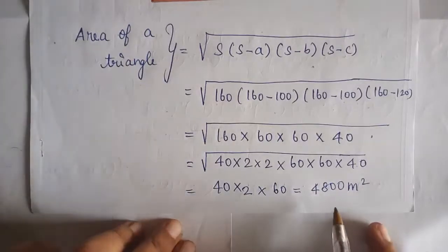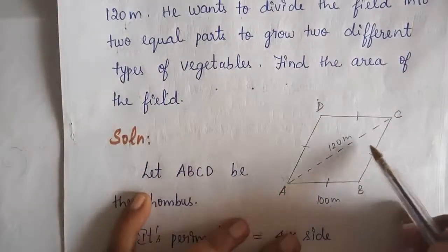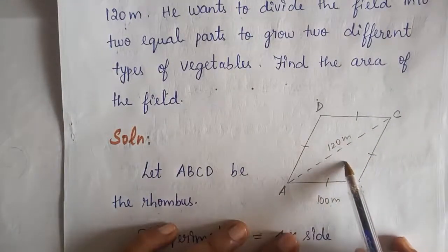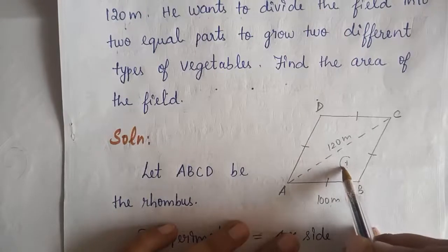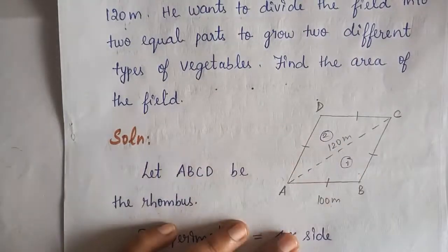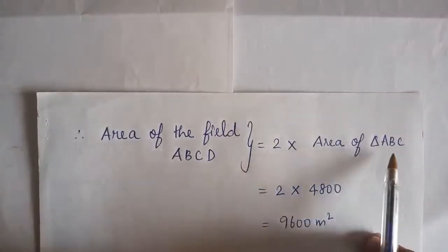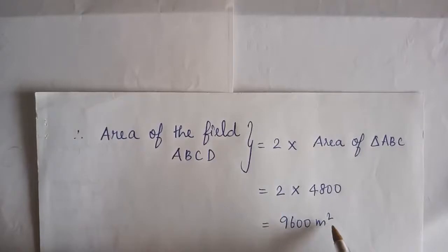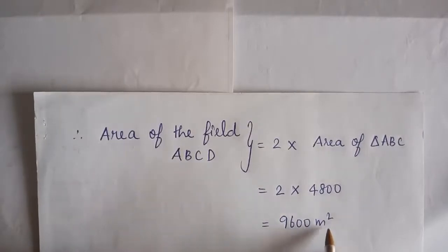Area of triangle ABC = 4800 square metres. Since the rhombus ABCD is divided into two equal triangles by diagonal AC, the area of the field = 2 × 4800 = 9600 square metres. Therefore, the area of the rhombus-shaped field is 9600 square metres.